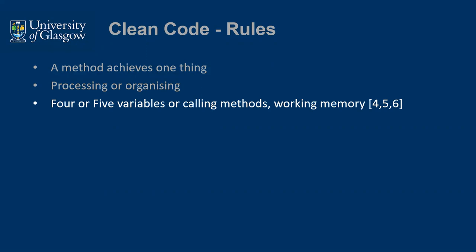There are articles and references about working memory. You can only keep about six things in memory — some people only about five. By having 20 variables, it's hard for people to keep track of what each is doing. But if you've only got four or five variables, someone's more likely to understand what your method's doing, because they can keep in their memory what those variables are doing or which methods have been called. Your working memory would struggle if you're doing more than that.